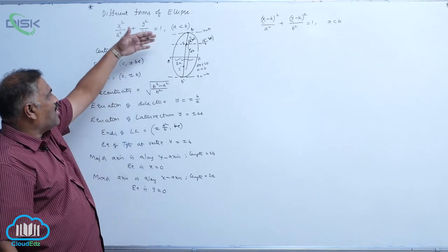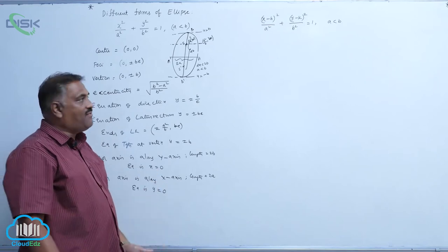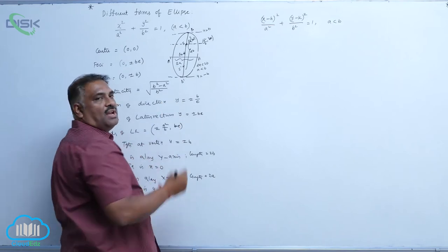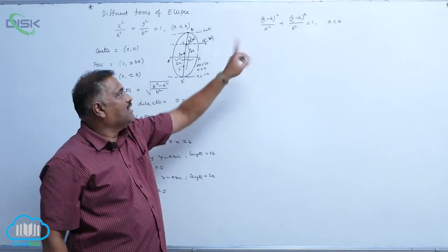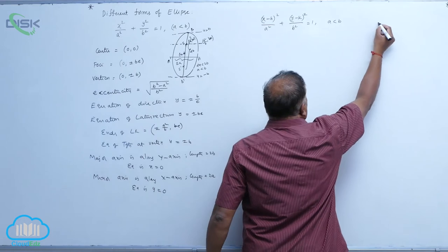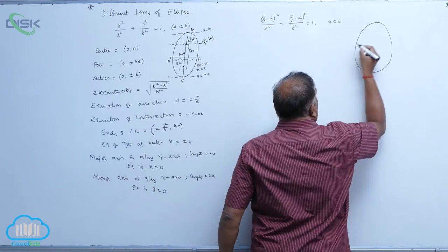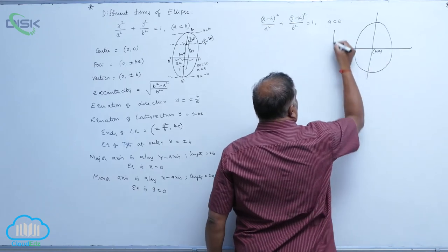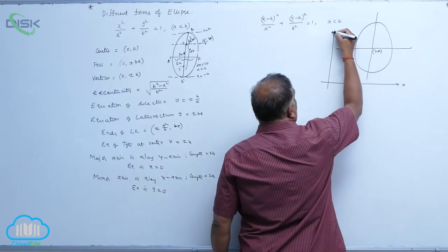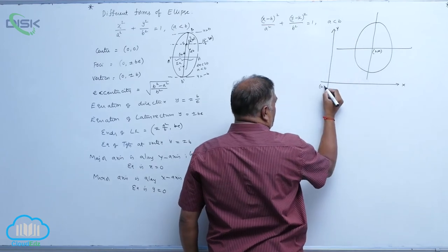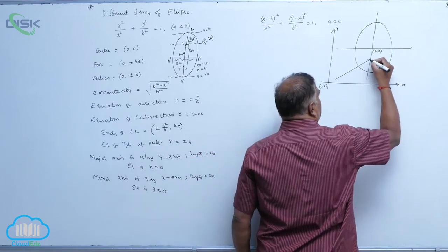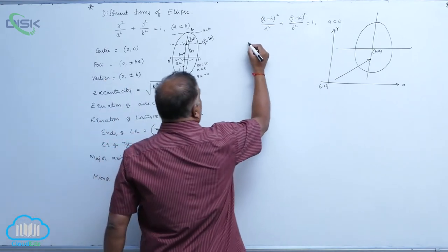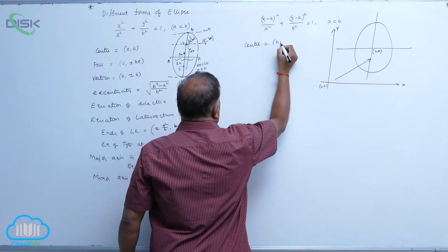We discussed all these properties. In the same fashion, if the origin — when the center of the ellipse at (0, 0) is shifted to some point (h, k) — then the new ellipse will be centered at (h, k) and the coordinate axes will shift accordingly. Center is equal to (h, k).